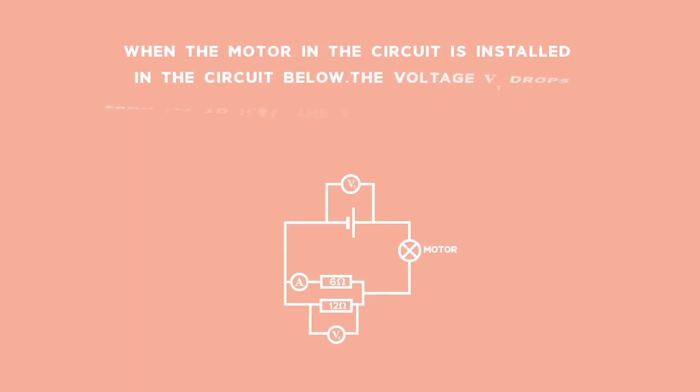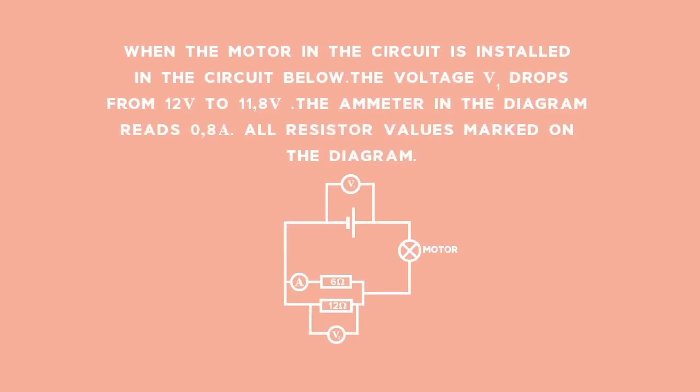In this circuit, we're told that a motor is installed in a circuit. A voltmeter across its terminals initially reads 12 volts when no current flows. But when a motor is installed, the voltage drops to 11.8 volts. The motor is a resistor, but there is also a pair of parallel resistors in the circuit, connected in series with the motor and the cell. Through the 6 ohm resistor, 0.8 ampere flows.